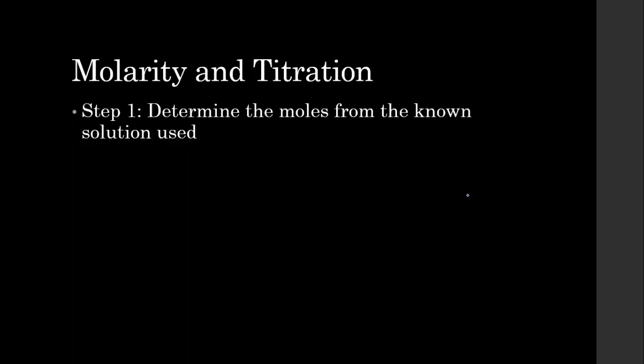So here are the steps for solving a titration problem. First, we need to determine the moles from the known solution that we are using. So you're going to have a molarity. You're going to know how much you have of that solution. So from there, we can find moles.